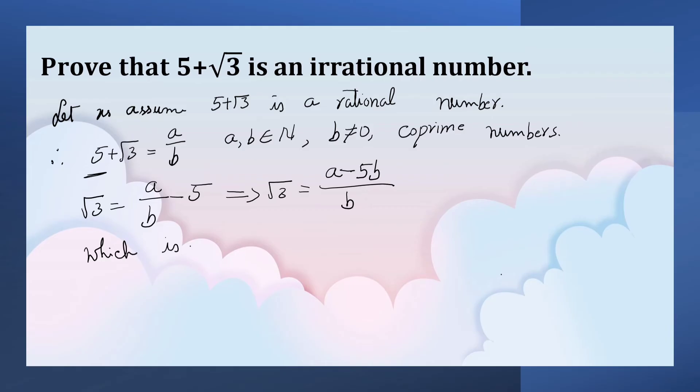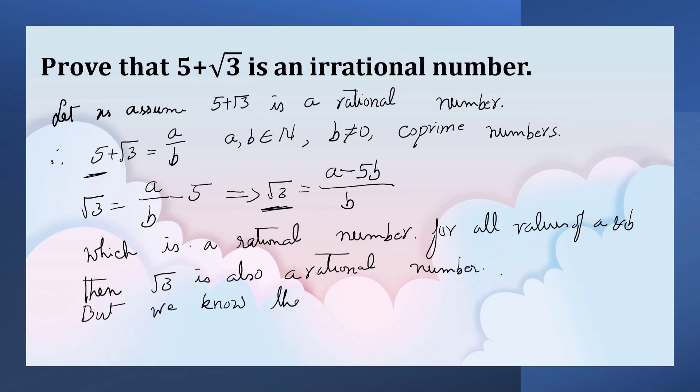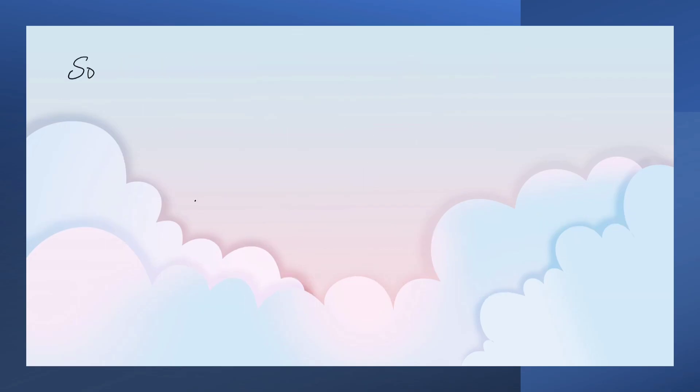Which is a rational number for all values of A and B. Then root 3 is also a rational number. But we know that root 3 is an irrational number. So, 5 plus root 3 is an irrational number.